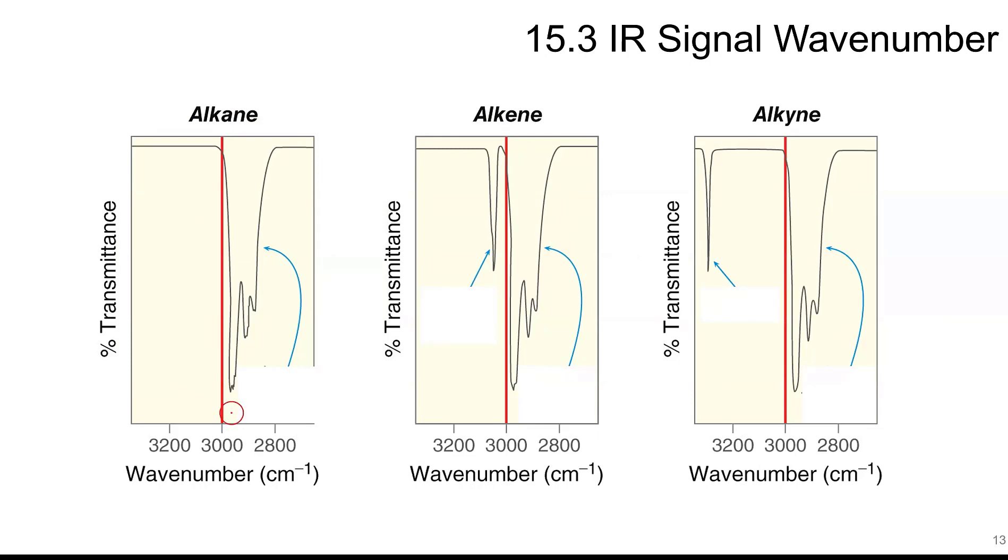So I mentioned the wave numbers. If you have wave numbers that are below 3000, these are your CH on SP3 carbons. So your single bonded alkanes. If you have something that is over 3000, and that is the defining line there. So if it's under 3000, it's a CH-SP3. If it's over 3000, this is a CH on a double bonded carbon. So this is an SP2. And then again for the below is CH for SP3.